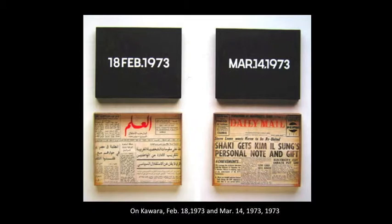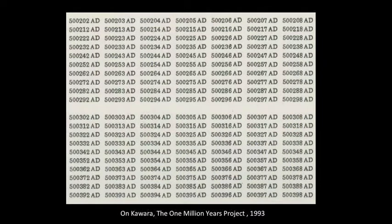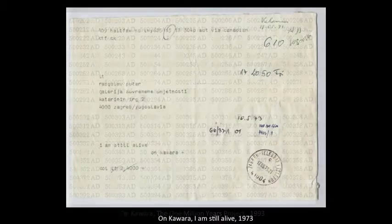On Kawara's Today series consists of that day's date painstakingly painted on a canvas. The project began on January 4th, 1966, and is planned to end only with Kawara's death. The date is always painted in the language of the country he is in at the time. He is still alive. When I Got Up, another project which lasted from 1968 to 1979 — each day Kawara sent two postcards from the location where he was, with the time he got up stamped on the postcard.